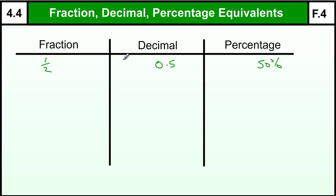To get from a half to a decimal, if we didn't know it, we could do 1 divided by 2 on a calculator and that would tell you it was 0.5.